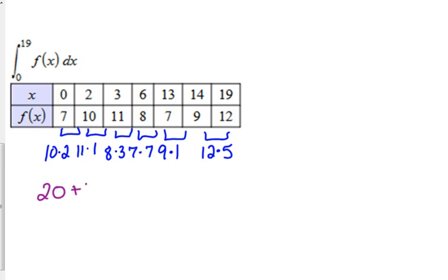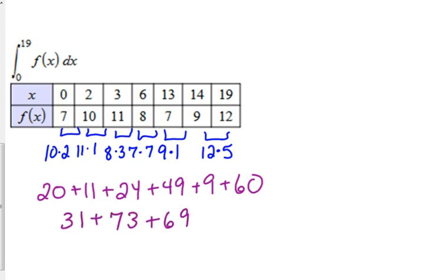So I've got 20, plus 11, plus 24, plus 49, plus 9, plus 60, quite a few here. We got 31, plus 60, 73, plus 69, so 104, plus 69, that equals 173. Woohoo!